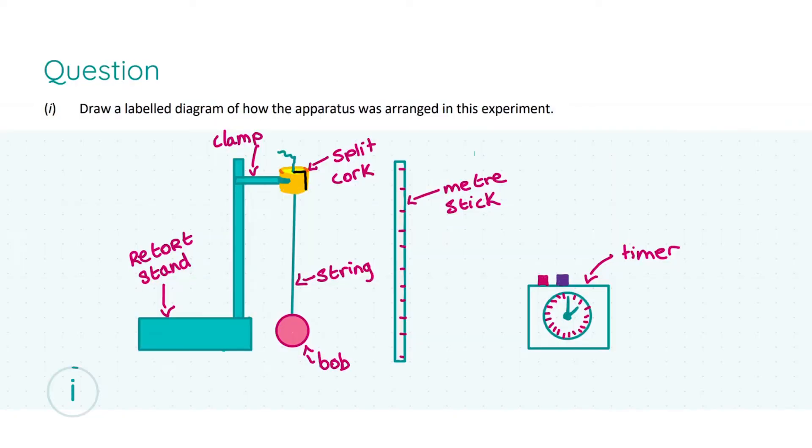In part one, we're asked to draw a labelled diagram of how the apparatus was arranged in this experiment. The key thing is that we draw a labelled diagram. As you can see, my diagram is full of labels because for every label you miss you will lose one mark. Since this is a simple pendulum experiment, your main marks will go for a correct bob arrangement—the bob is at the end of the string oscillating back and forth. That gets you three marks, and you'll get marks for the string as well because these pieces of apparatus are characteristic to the simple pendulum.